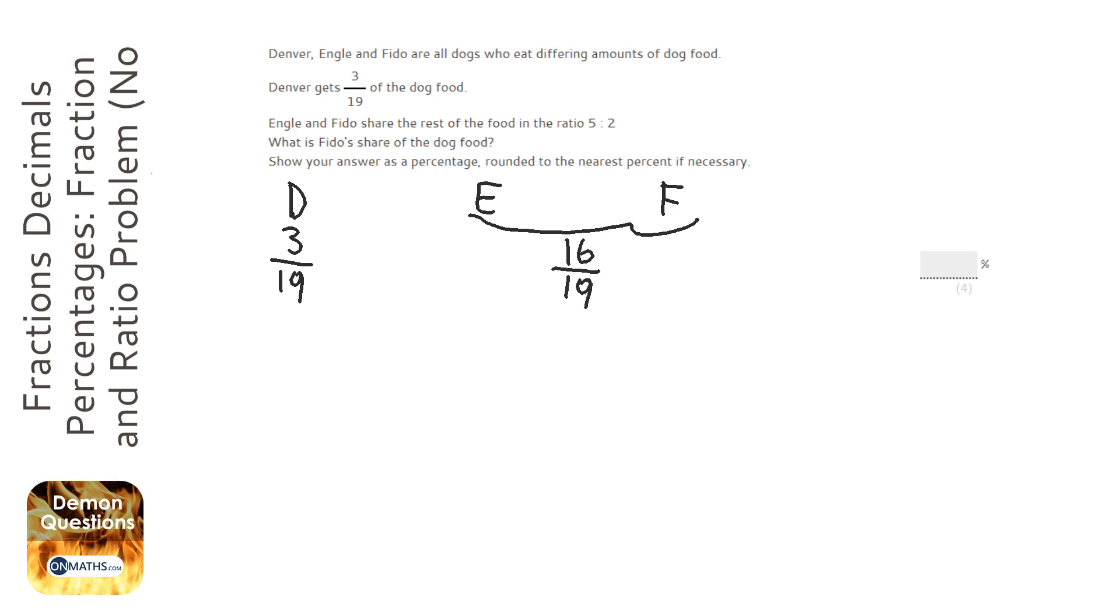So we can kind of ignore Denver now because we used Denver's amount or fraction of the food to work out Engels and Fido's combined. So that's how much food they'll get, but they're sharing it in the ratio of 5 to 2.